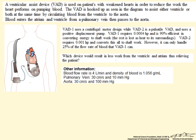So VAD-1 uses a centrifugal motor design while VAD-2 is pulsatile and uses a positive displacement pump. VAD-1 requires 0.0004 horsepower and is 90% efficient in converting energy to shaft work. We are going to assume the rest is lost to heat to its surroundings and does not influence the fluid. VAD-2 requires 0.001 horsepower and converts this all to shaft work. However it can only handle 25% of the flow rate of blood that VAD-1 can.